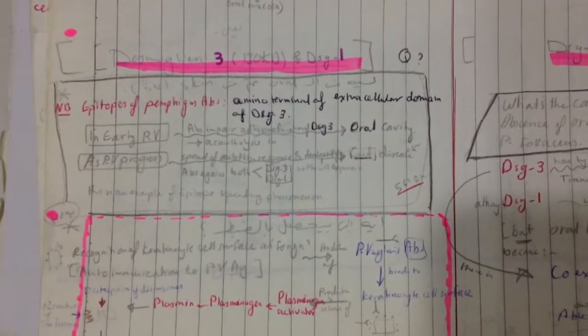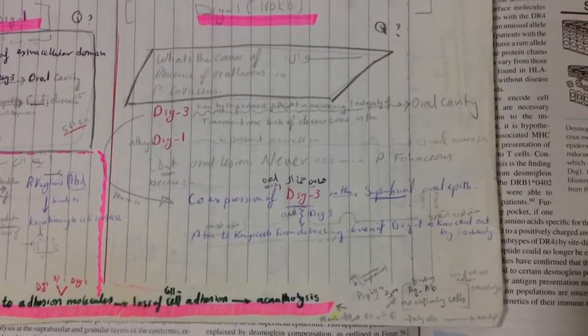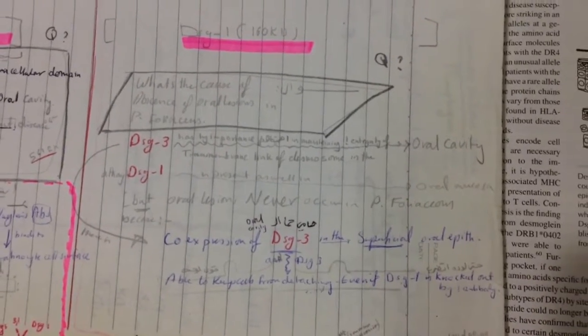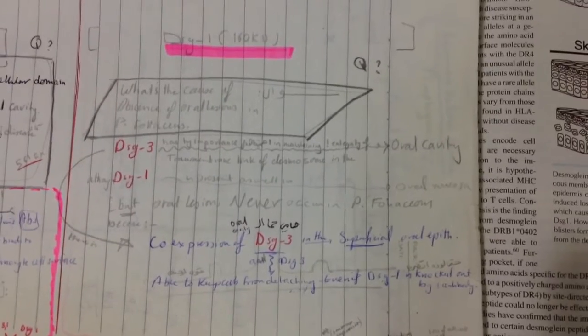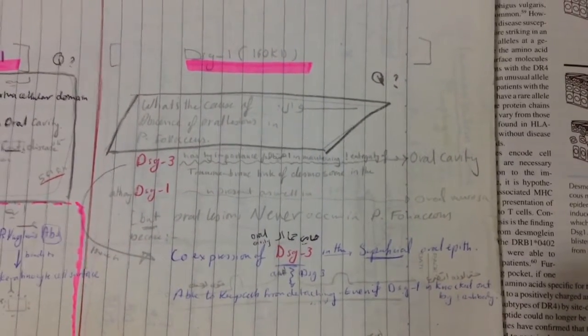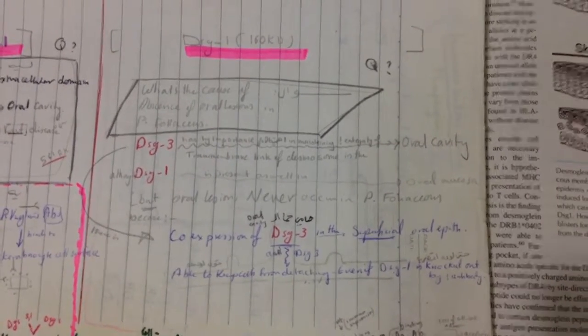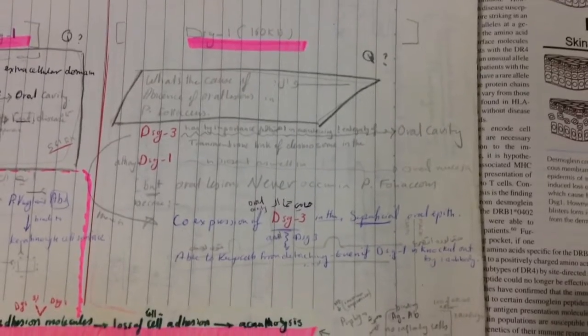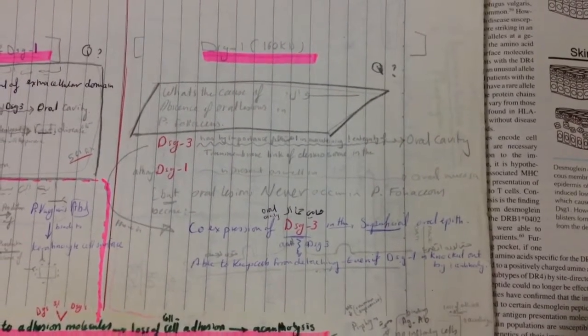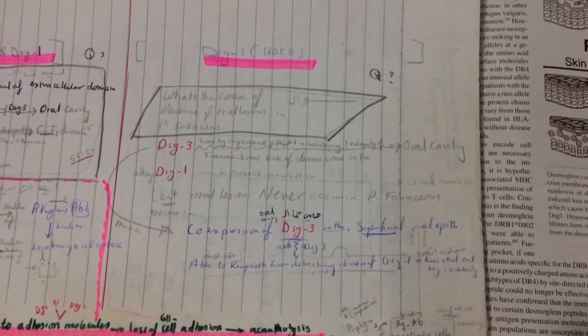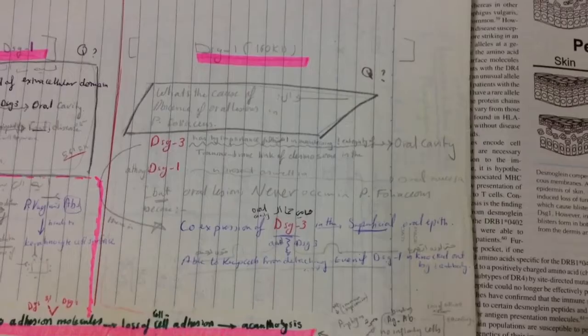This is the example of epitope spreading. Regarding why there are no oral lesions in pemphigus foliaceous: desmoglein 3 has primary importance in maintaining the integrity of desmosomes in the oral cavity. Although desmoglein 1 is also present in oral mucosa, oral lesions never occur in pemphigus foliaceous because of the co-expression of desmoglein 3 in superficial oral epithelium. Desmoglein 3 alone can keep cells from detaching even if desmoglein 1 is knocked out by the antibody.